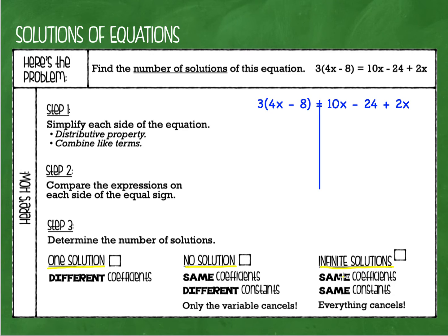Infinite solutions means you can put any number in the world in place of the variable and both sides of the equation are going to be equal to each other, so there is an infinite number of solutions. Any number you can ever think of — positive, negative, large, small, fraction, decimal — it doesn't matter; every single number in the world is a solution of that particular equation.